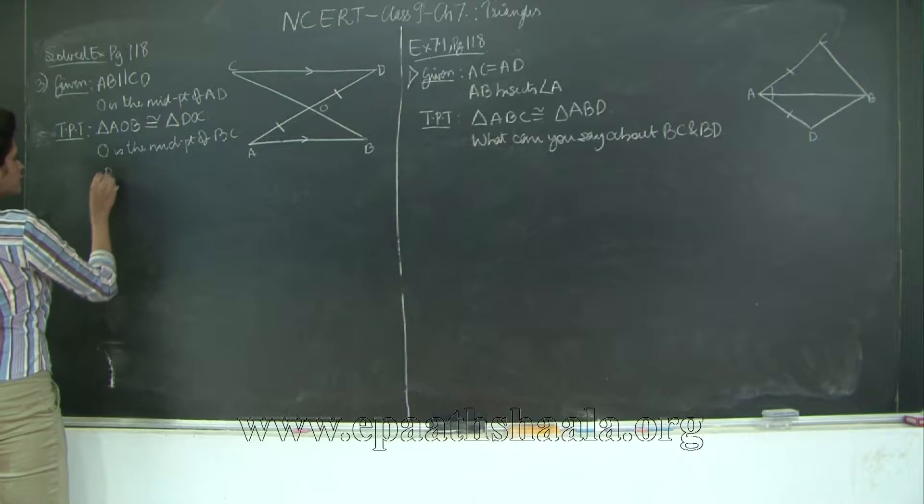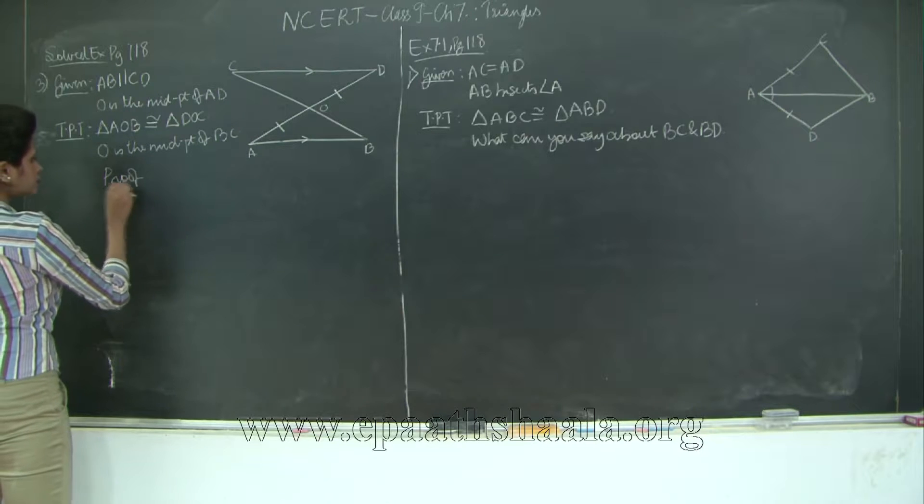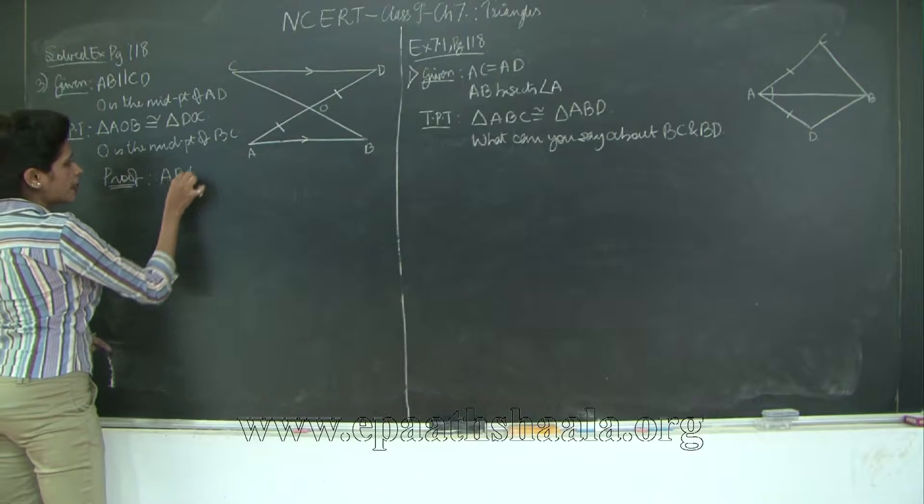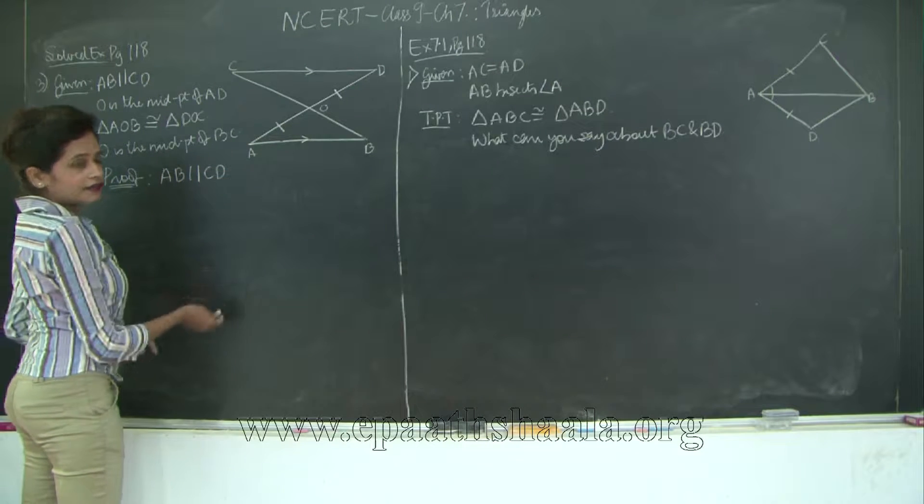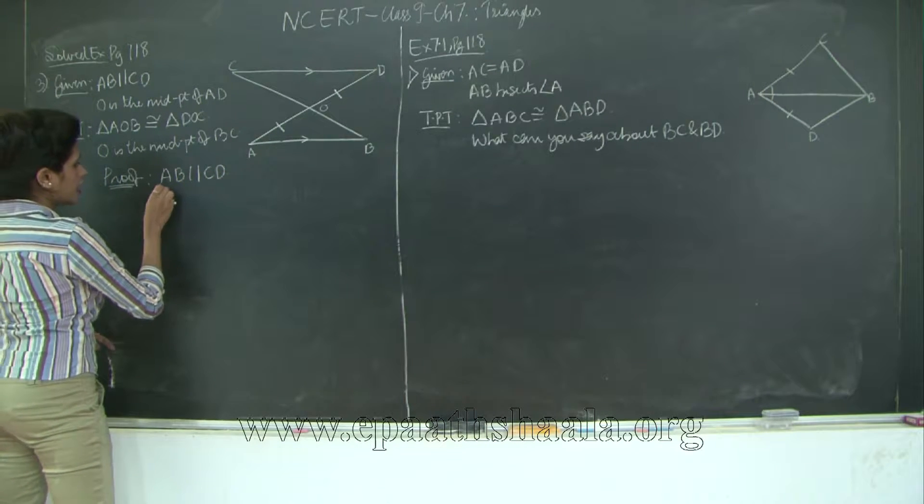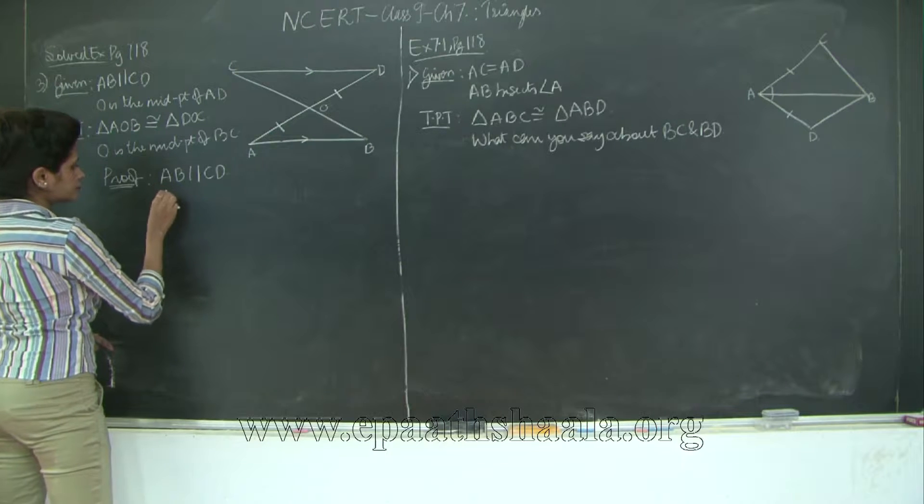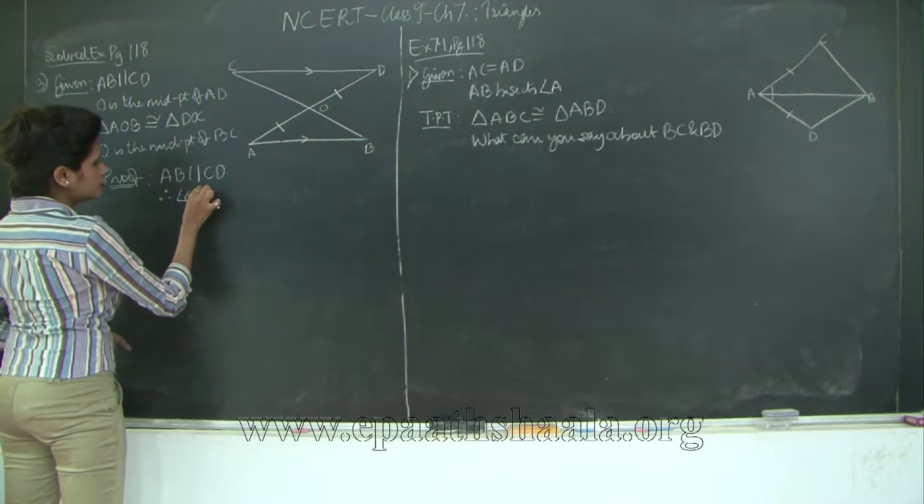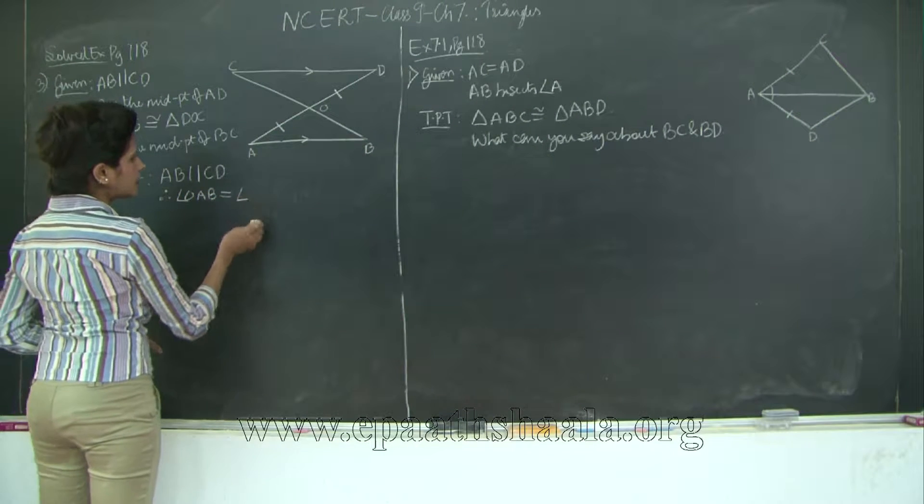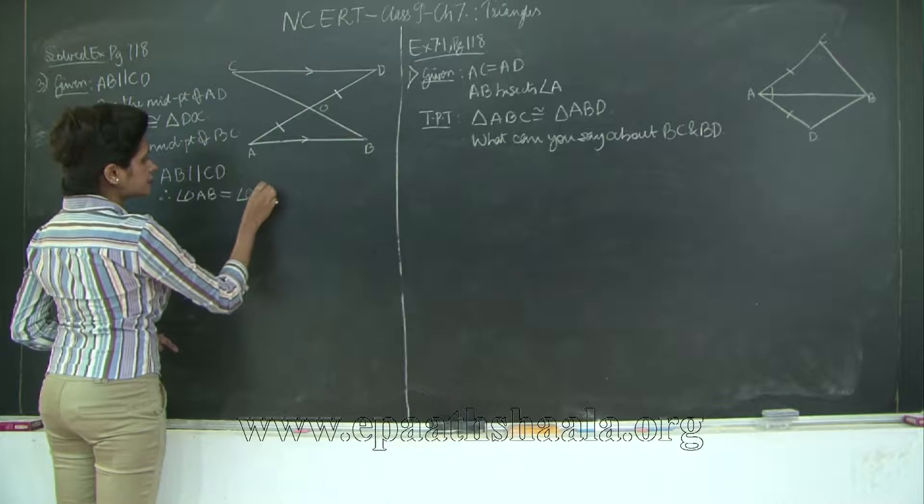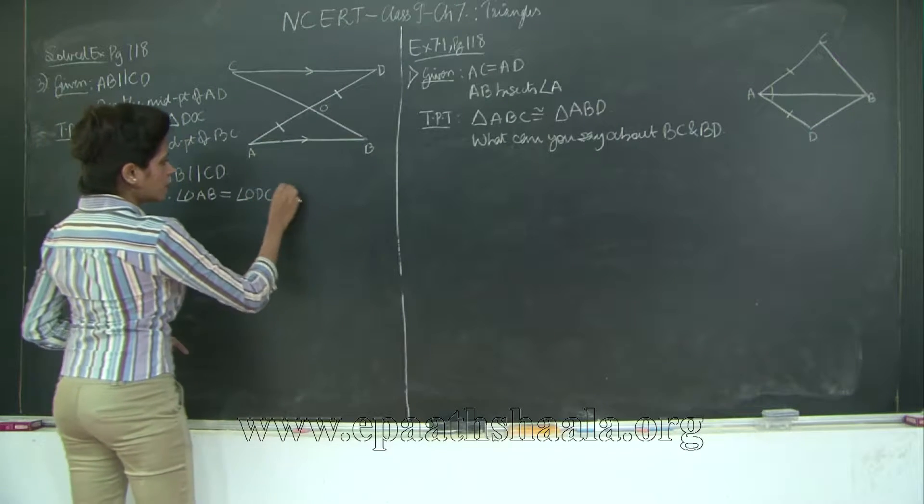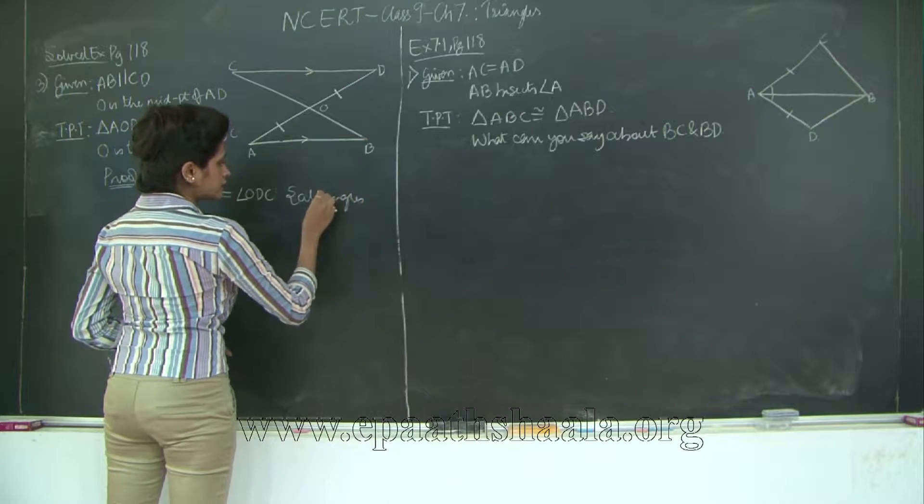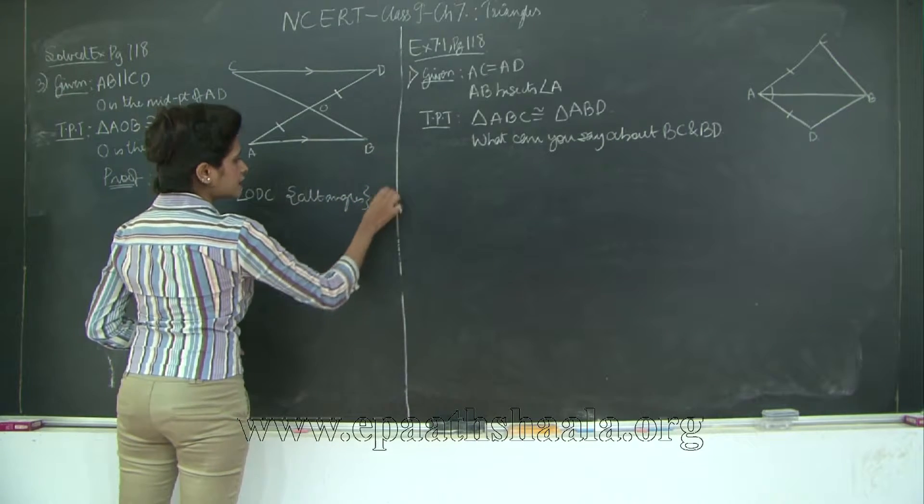So I will say prove AB is parallel to CD. Therefore what do I get? Angle OAB is equal to angle ODC by alternate angles and mark the statement as 1.